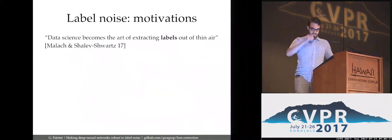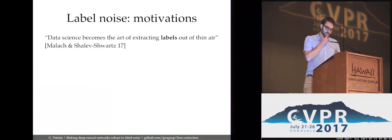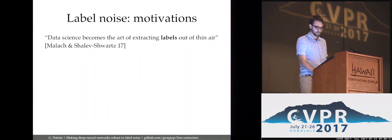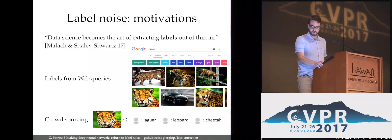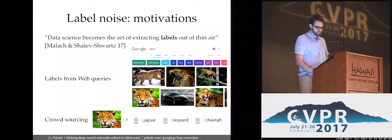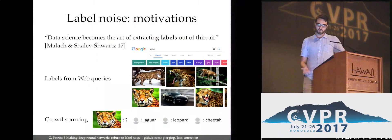So why should we care about label noise? When we are just a final user of a dataset for vision, we often forget or overlook the problem of labeling those images. But when we collect those datasets, we quickly realize that labels are expensive to obtain because they require human intervention. So we resort to proxies such as web queries or crowdsourcing. Those are great because they scale to very large datasets, but at the same time they introduce a systematic noise in our training set. So we'd like to be robust to those problems, or at least our algorithm should know about that.